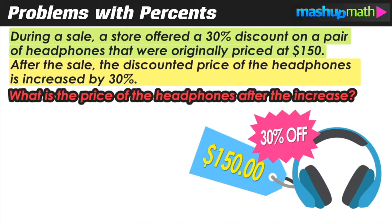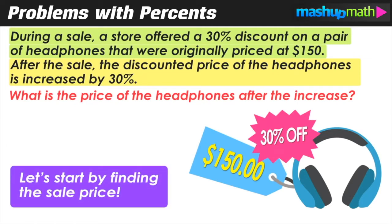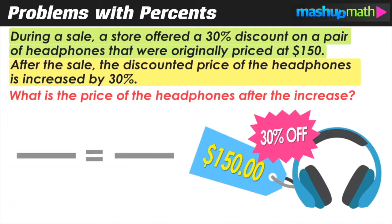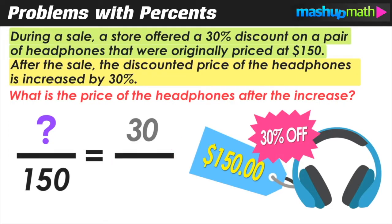We can see why this is a multi-step problem — we have a few things going on here. Let's start off by finding the sale price, which means figuring out the price of the original $150 headphones after the 30% off discount. We can think of this as finding 30% of 150 by setting up a proportion: an unknown value over 150 equals 30 over 100.